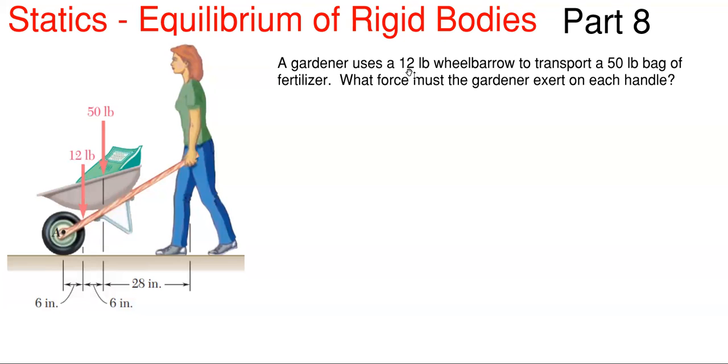What we have here is a gardener that uses a 12-pound wheelbarrow to transport a 50-pound bag of fertilizer. The question asks what force must the gardener exert on each of the handles. We have our diagram with the 50-pound bag of fertilizer, the wheelbarrow's weight of 12 pounds, and our distances shown.